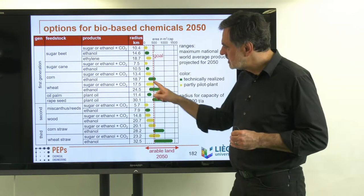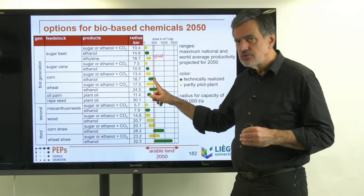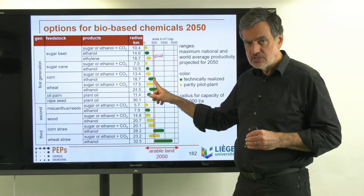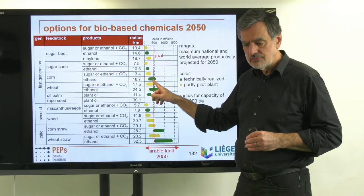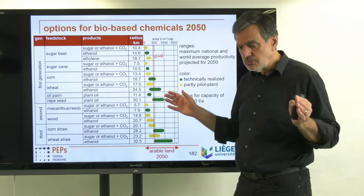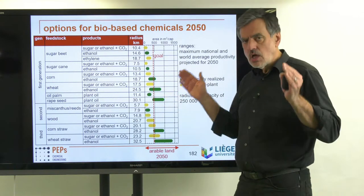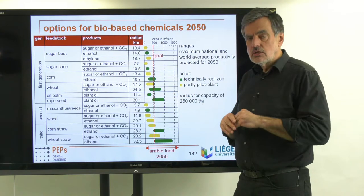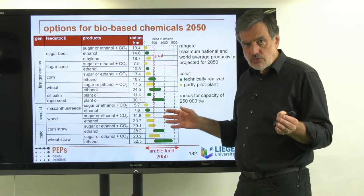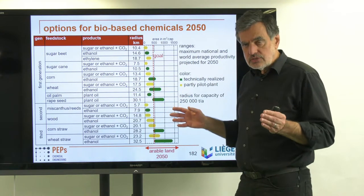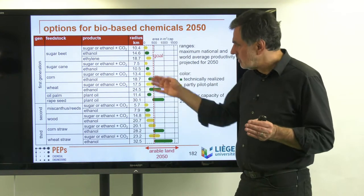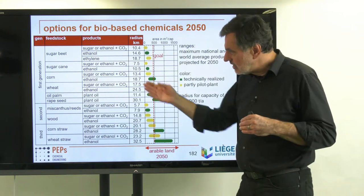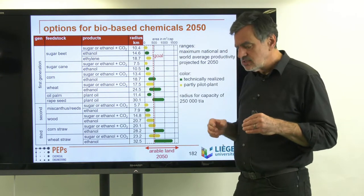The green processes definitely work. The yellow ones presumably work with high probability. The more we lose atoms from our original sugar, the more land area we need to produce the same kilograms of final product. Directly using the sugar, or ethanol plus CO2 captured for products, is the most efficient. Stripping off the CO2 needs a little more land area, and converting ethanol to ethylene — losing water — needs a little more still.